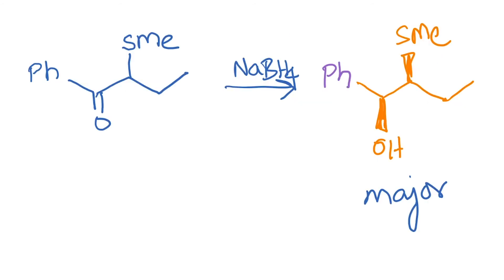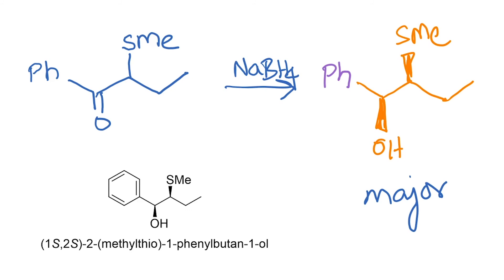The first example we look at is this compound reacted with sodium borohydride; the major product is the following compound. Sodium borohydride is a source of H minus, so H minus attacks and forms an alcohol. In order to make things clear, let us assign the stereochemistry for this compound. Labeling the carbons 1, 2, and 3, the hydrogen is over here and so this would be S. Assigning the stereochemistry for the other chiral center also gives S, so it is 1S,2S-methylthiobutanol.